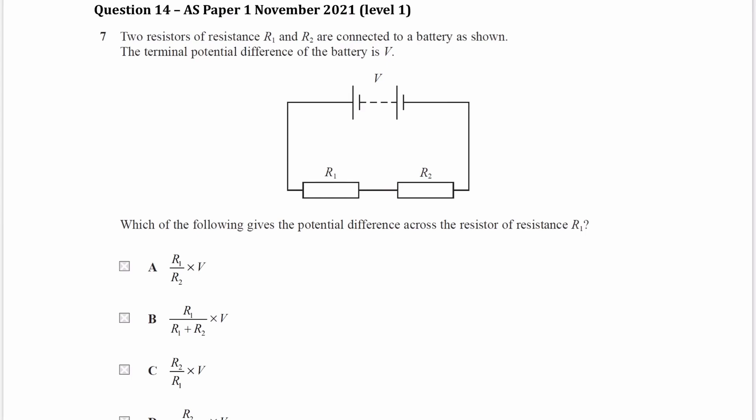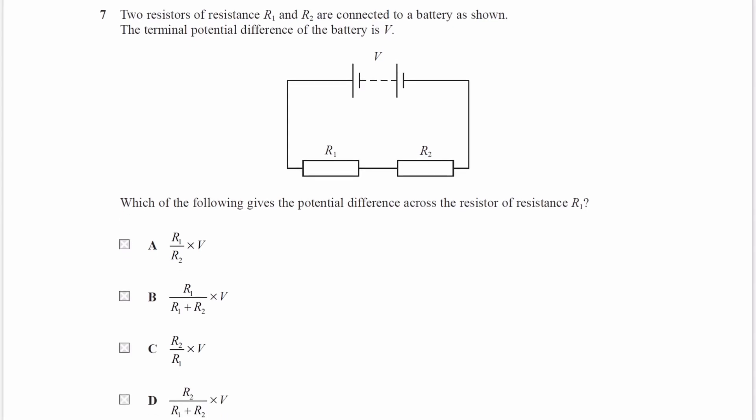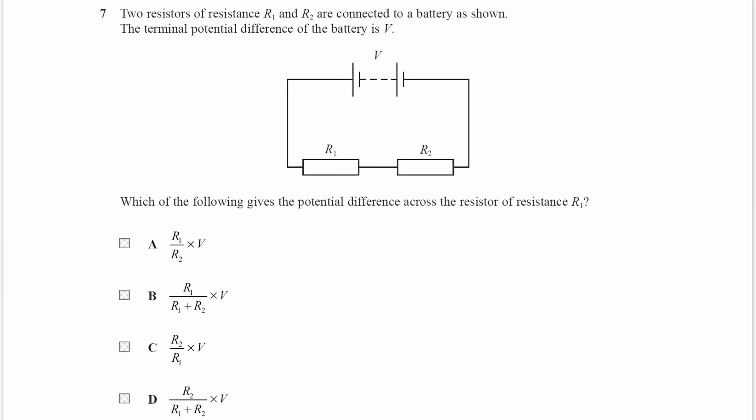We have two resistors, R1 and R2, connected to a battery. We're told the terminal potential difference of the battery is V.